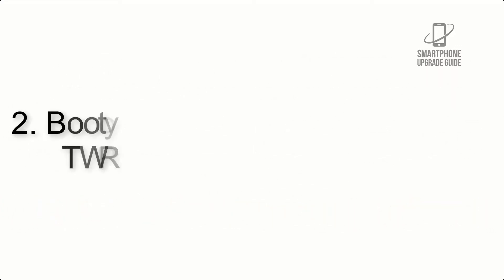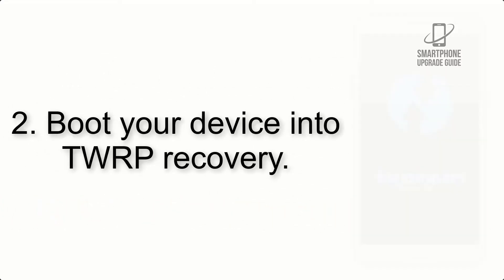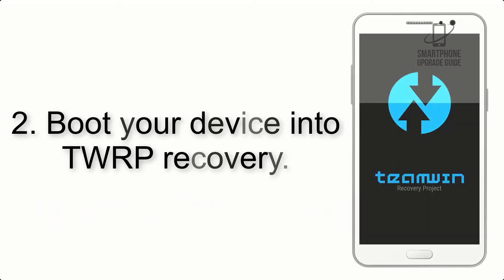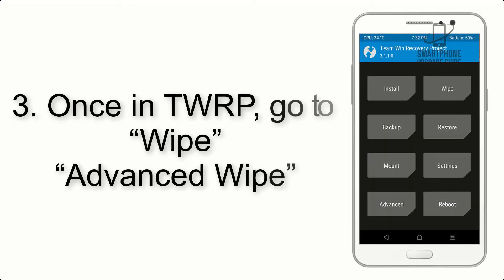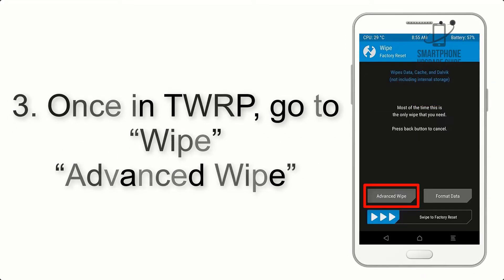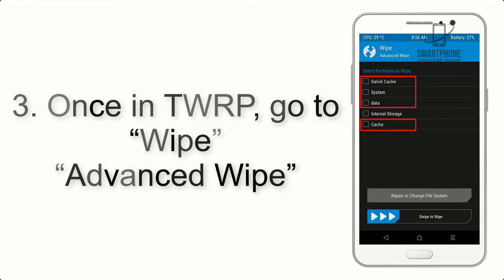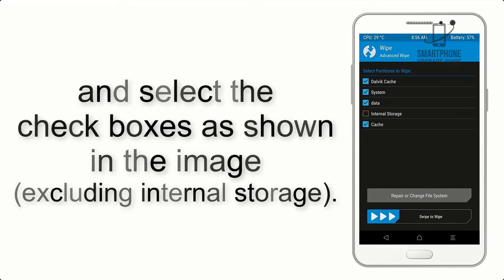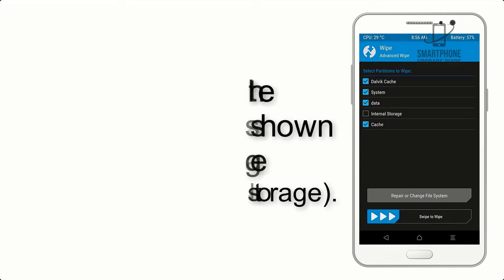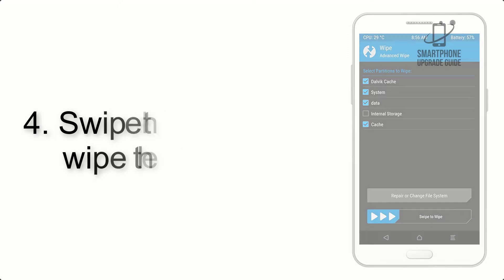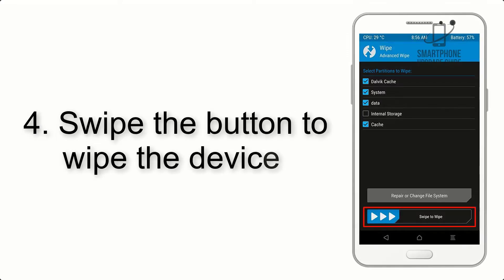Step 2: Boot your device into TWRP recovery. Once in TWRP, click on Advanced Wipe and select the checkboxes as shown in the image, excluding internal storage.